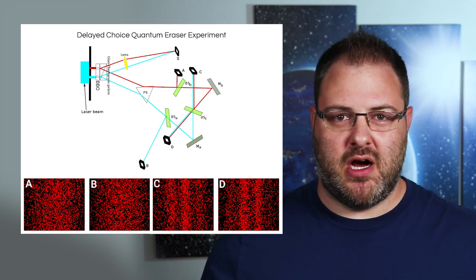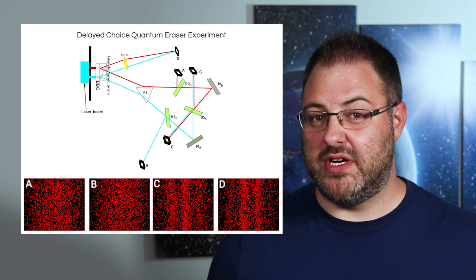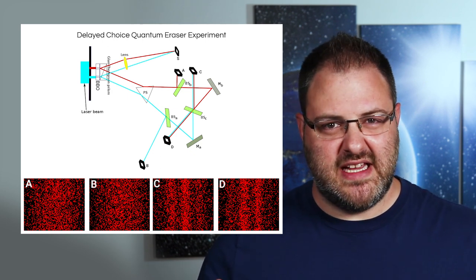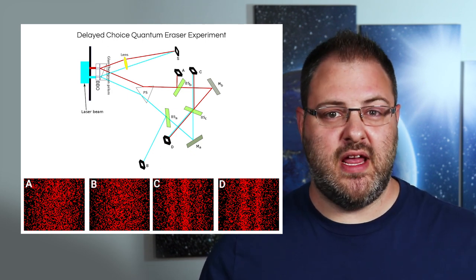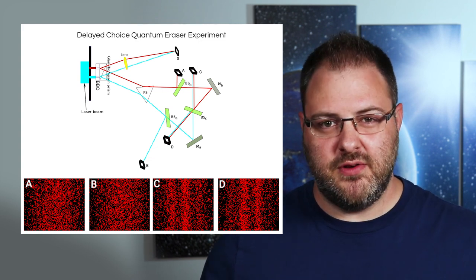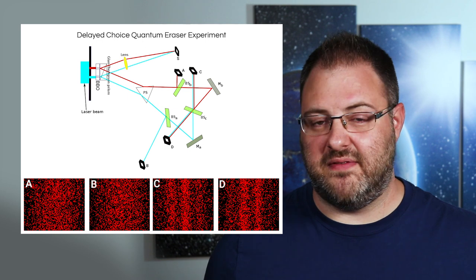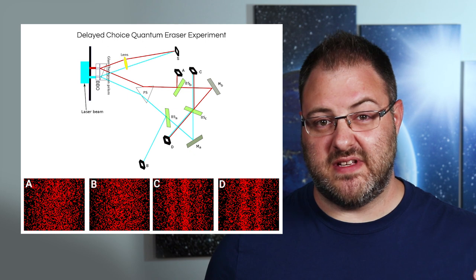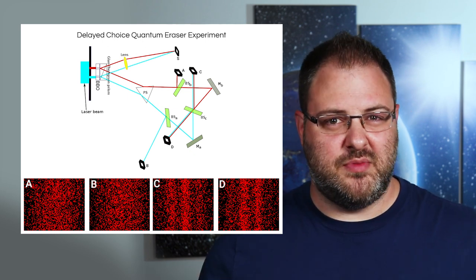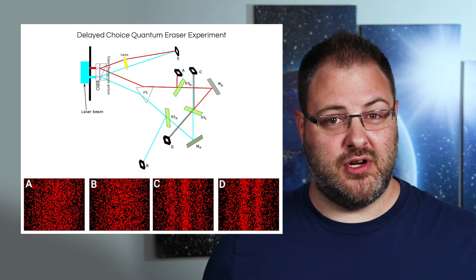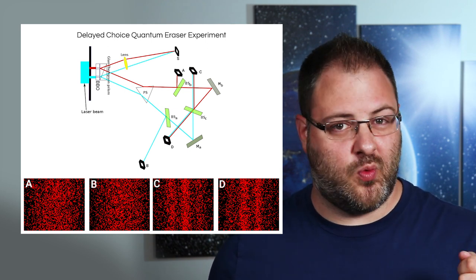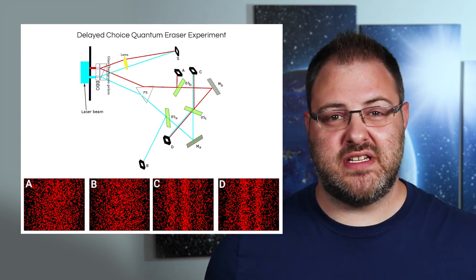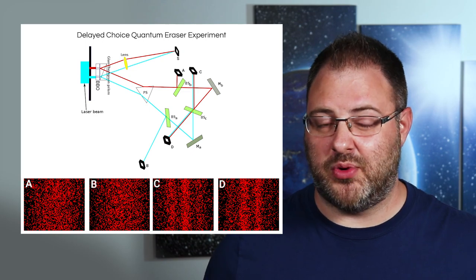It's as if the universe says, alright, the observer lost the information about which slit we went through, so it's safe to have gone through both of them again. It's really as if every single time we have the which way information about the path of a photon, the universe doesn't allow it to have behaved like a wave at all. It's also clearly able to retroactively change the result of its entangled partner, even if the measurement is performed after the signal photon should already have ended its journey and landed in one spot as a wave. This gives birth to a very interesting discussion about cause and effect and how we perceive it.